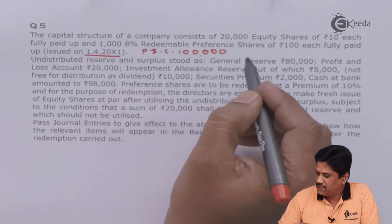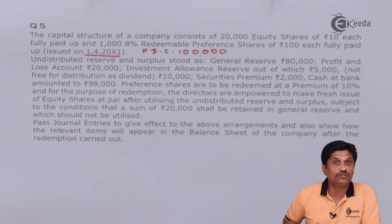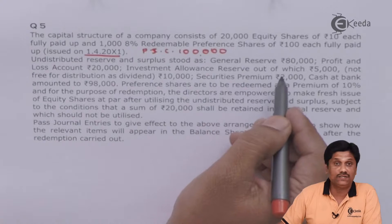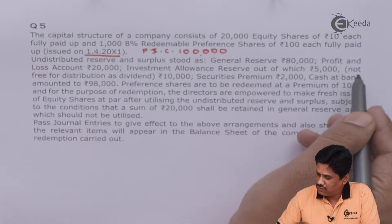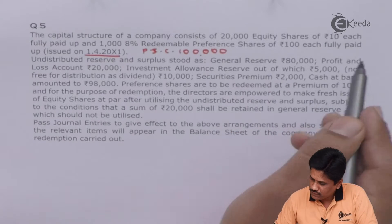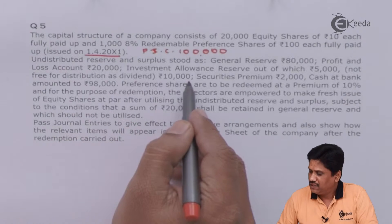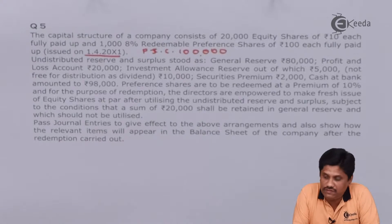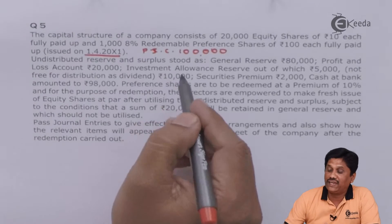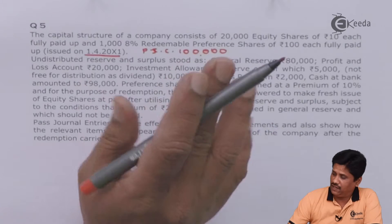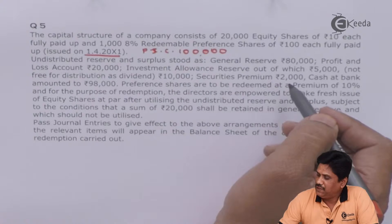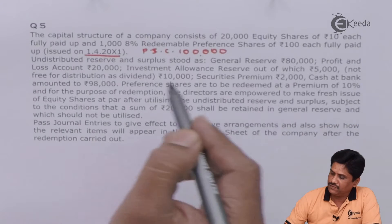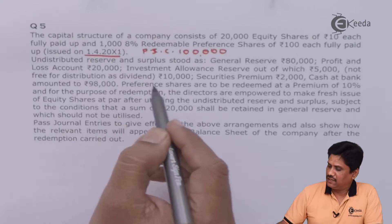Undistributed reserves and surplus stood as: General Reserve Rs.80,000; Profit & Loss account Rs.20,000; Investment Allowance Reserve — out of which Rs.5,000 is not free for distribution of dividend, total amount Rs.10,000 — so investment allowance reserve not fully divisible, only Rs.5,000 is divisible. Securities premium Rs.2,000. Cash at bank Rs.98,000.